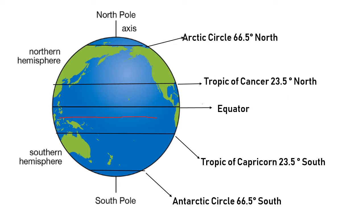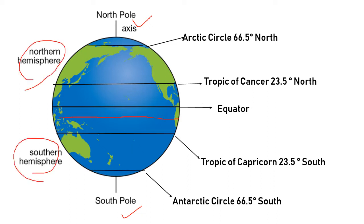The equator is an imaginary line around the middle of the earth. It is halfway between the North Pole and the South Pole, and divides the earth into the Northern Hemisphere and the Southern Hemisphere.